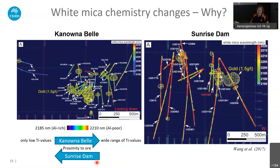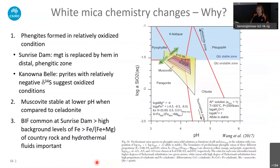Ray also mapped out different titanium values in white micas at Canola Bell depending on proximity to ore — so that's maybe something we can also map with absorption features in the shortwave or mid-wave infrared. I really recommend Ray's paper, as he discusses different possibilities for why we see this white mica chemistry change in phengites.